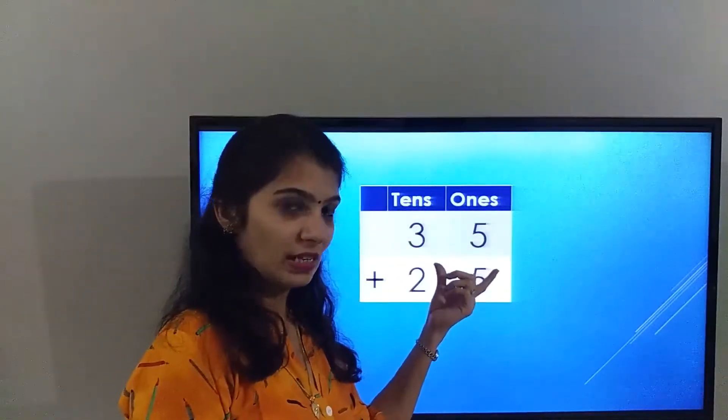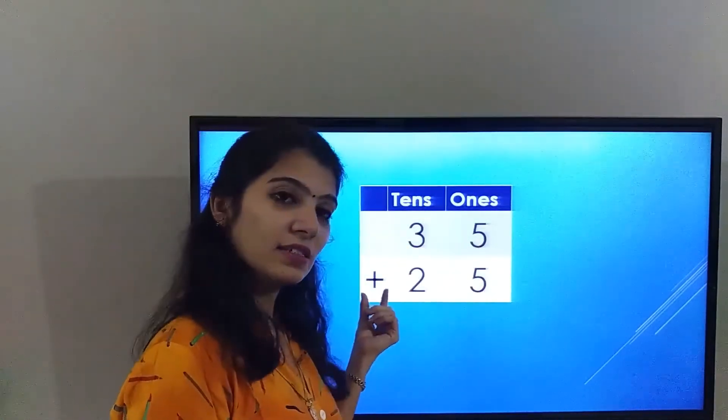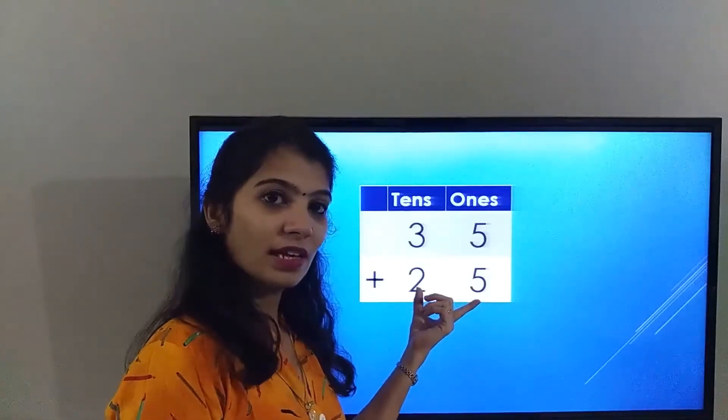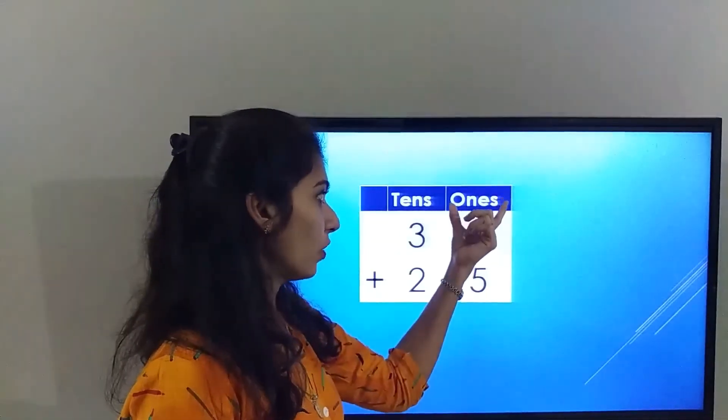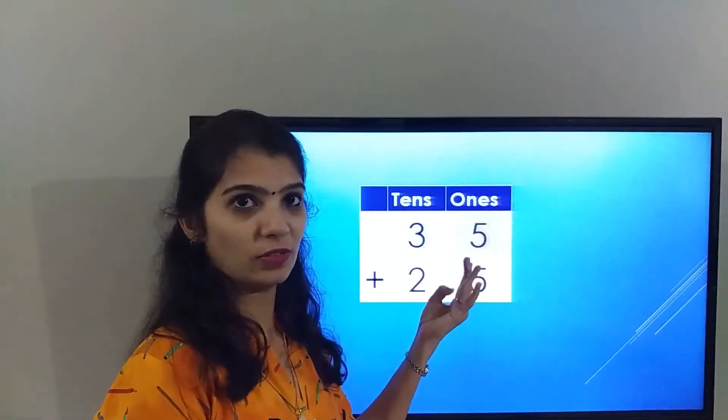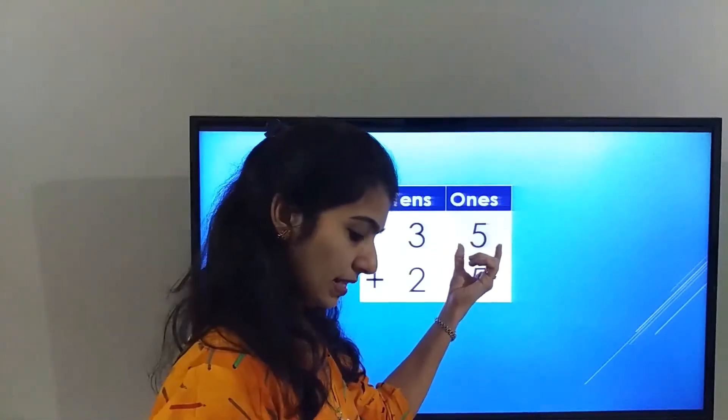The number on the screen is 35 plus 25. As we know, we need to solve it from the ones place first. So the number in the ones place is 5 plus 5.